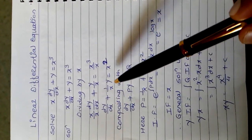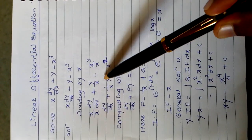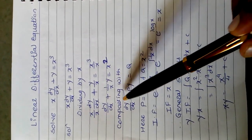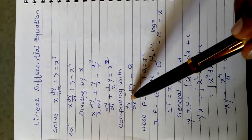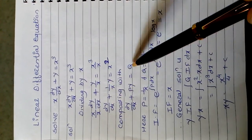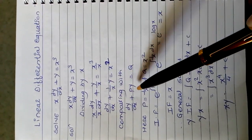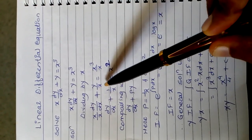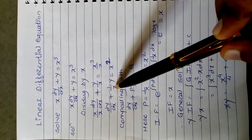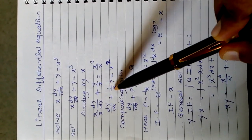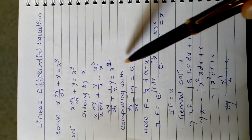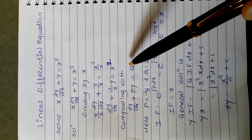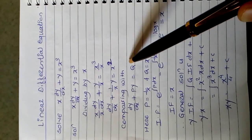Then we compare this equation with the standard form dy/dx plus Py equals Q. Here P is the coefficient multiplied by y, so P equals 1/x, and Q equals x squared.